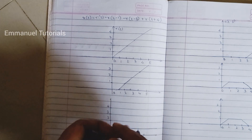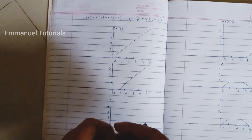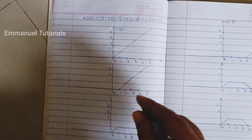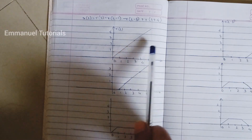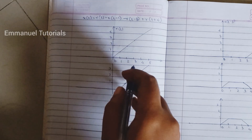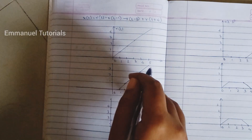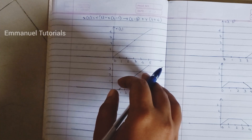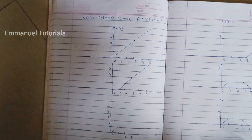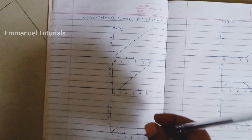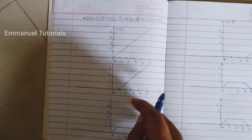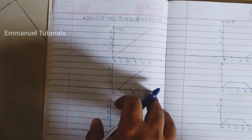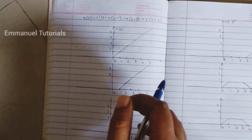Hello everyone, welcome back to Manual Tutorials. Today we'll be seeing a doubt asked by one of our students in the comment section. This is a sketch-the-signal example with a ramp type of signal. If you have not subscribed to Manual Tutorials yet, do subscribe, like, and share this channel with your friends. If you have any doubts related to signals and systems or electronics or computer science engineering subjects, please let us know in the comments. Let's start.